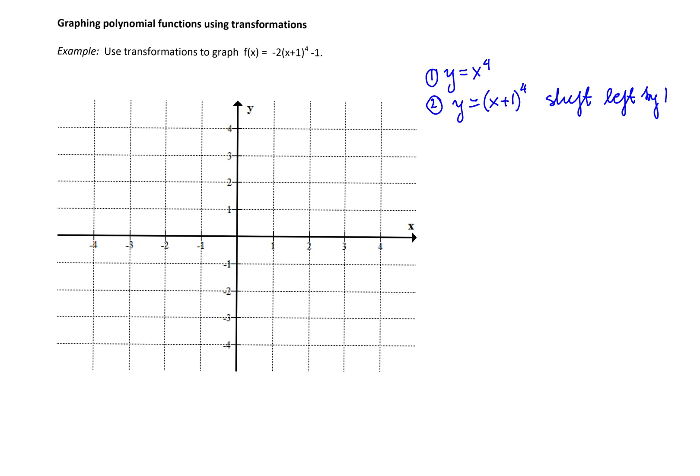The next transformations that we look for are horizontal compresses and stretches. There are none here. Next transformation is the vertical stretch or compression and that is multiplying the given function by 2. This is the vertical stretch.